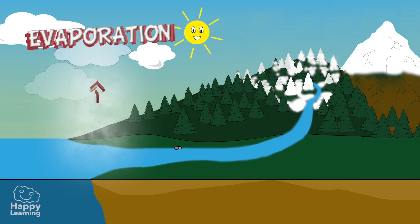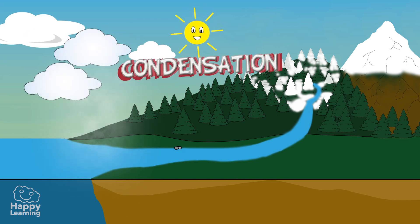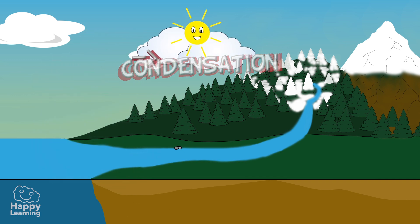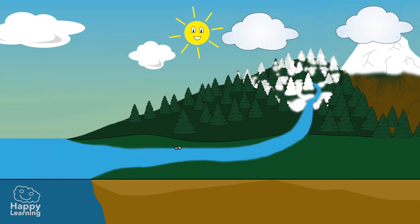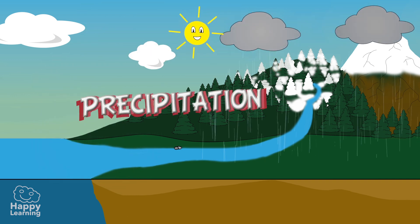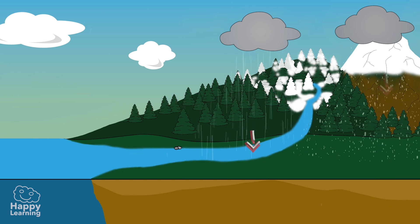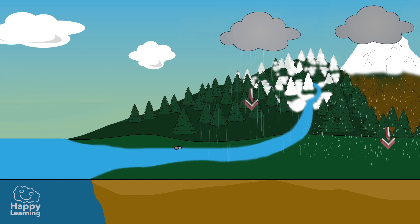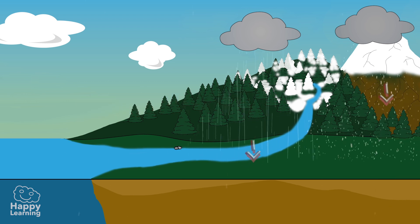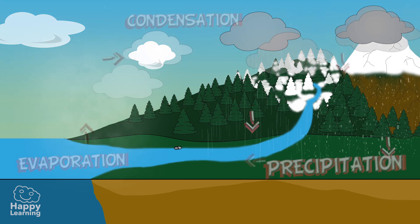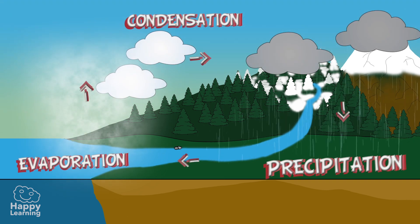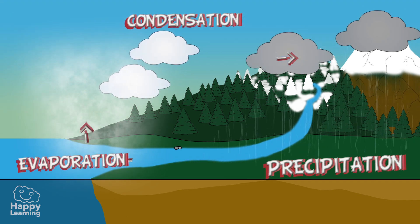Evaporation. Condensation. Precipitation. That is why it's called the water cycle, because it forms a never-ending circle.